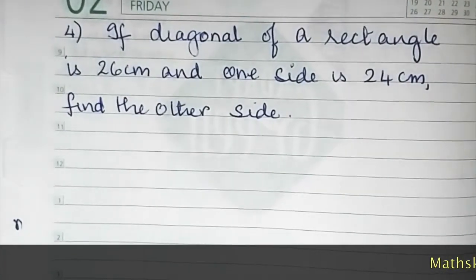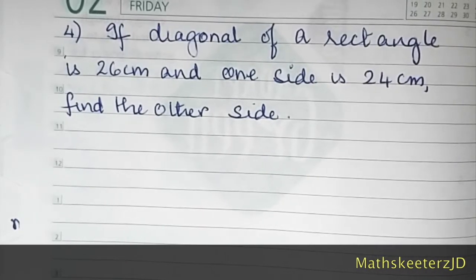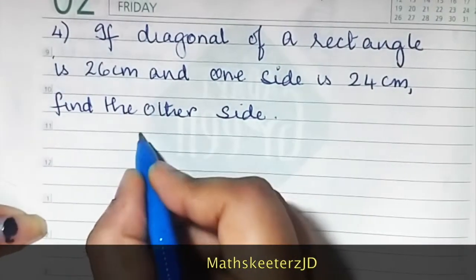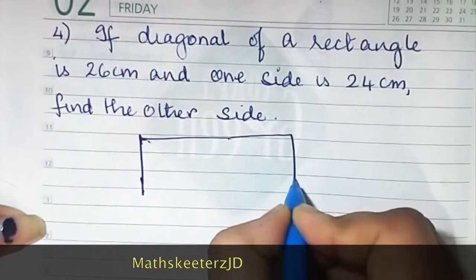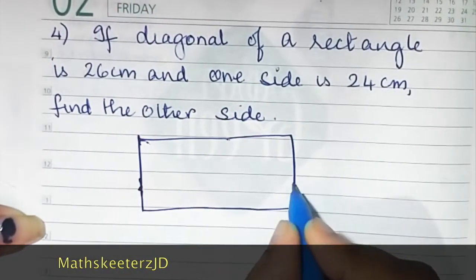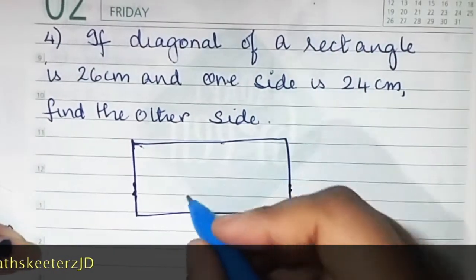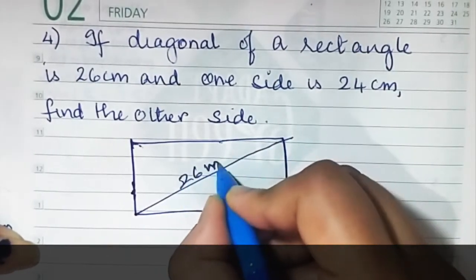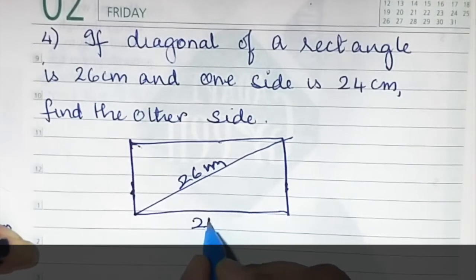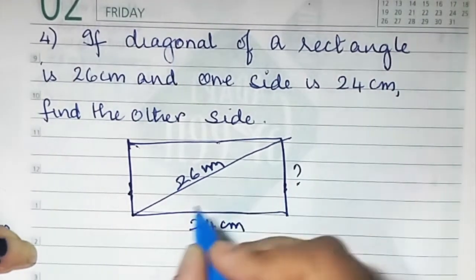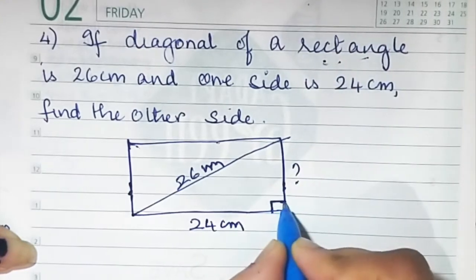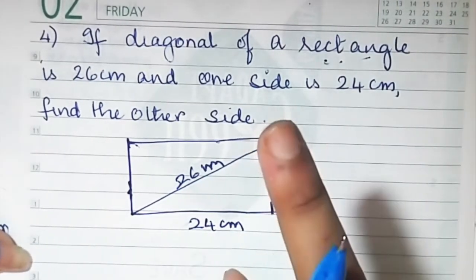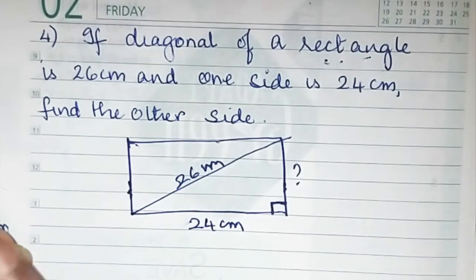Let's do sum number 4. If the diagonal of a rectangle is 26 centimeters and one side is 24, find the other side. You don't have to construct — you have to solve this sum. The diagonal is 26 centimeters and one side is 24 centimeters. It is a rectangle, so this angle is going to be 90 degrees. When you have a 90-degree angle, the diagonal becomes the hypotenuse, and that reminds us of Pythagoras.